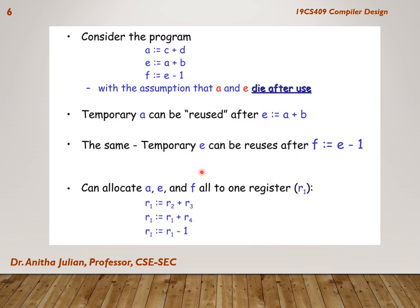Consider this piece of code: a = c + d, e = a * b, and f = e - 1, with the assumption that a and e die after use. We have used a and e, so henceforth in the program we don't need them. The temporary a can be reused after e = a + b, and e can be reused after f = e - 1. So we can allocate registers for a, e, and f all into one register.